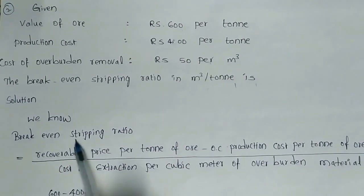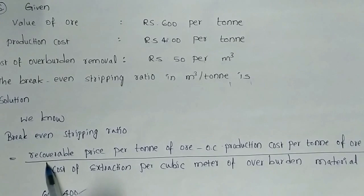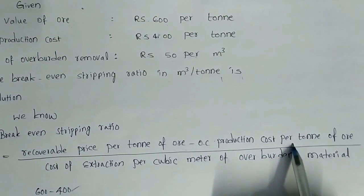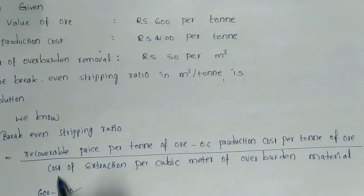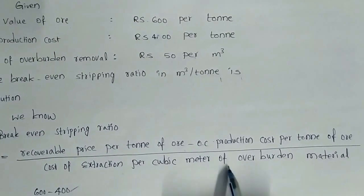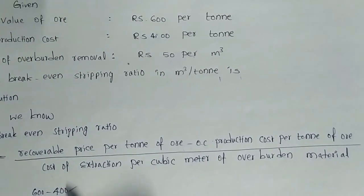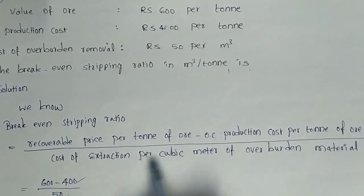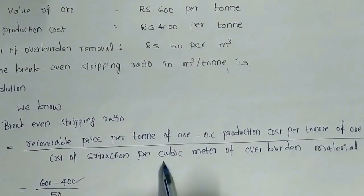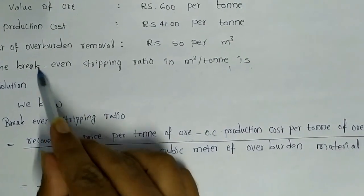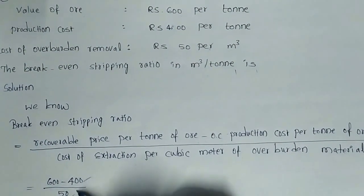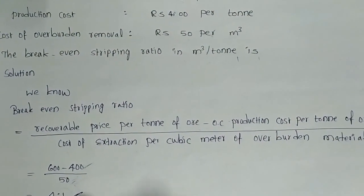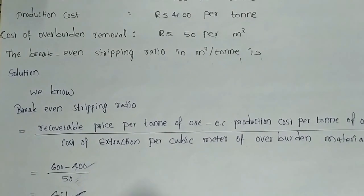Using the same breakeven stripping ratio formula: recoverable price per ton of ore minus the OC production cost per ton of ore, divided by the cost of extraction per cubic meter of overburden material. Here 600 is the recoverable price per ton of ore, subtracted with 400 as the OC production cost per ton of ore, divided by 50 as the cost of overburden removal. Finally we get the breakeven stripping ratio as 4:1 cubic meters per ton.